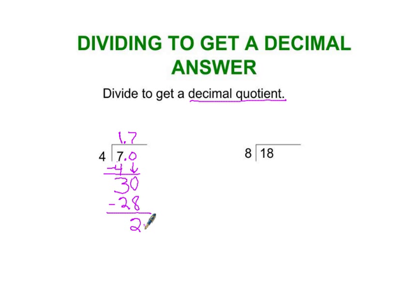Subtract to get a two. Well, I can't put a remainder two, so I'm going to go ahead and put another zero on here because those zeros are free. Four goes into twenty five times. Five times four is twenty, and finally I have no remainder here. So my answer is one point seven five. Here's another example. Eight goes into eighteen two times.